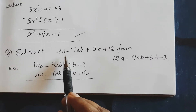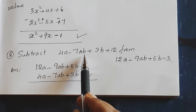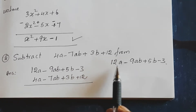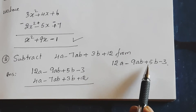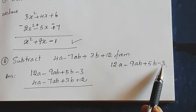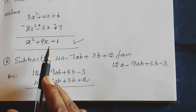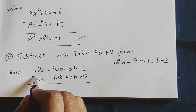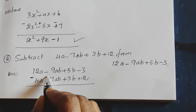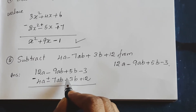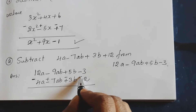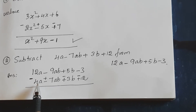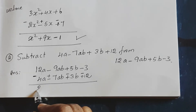Next question: subtract 4a minus 7ab plus 3b plus 12 from 12a minus 9ab plus 5b minus 3. By the rule, change the sign of all the terms being subtracted: positive 4a becomes negative, negative 7ab becomes positive, positive 3b becomes negative, positive 12 becomes negative. Now, 12a minus 4a gives 8a.